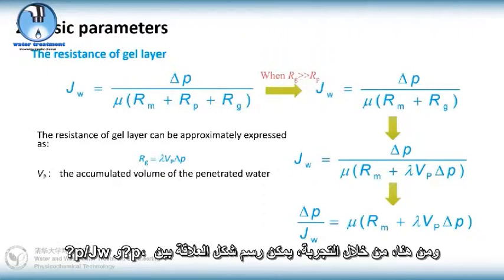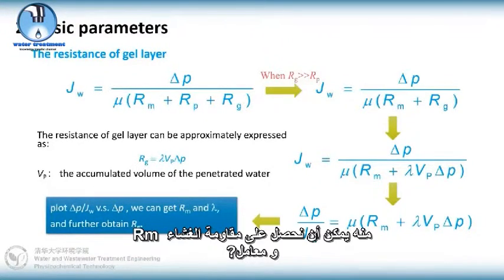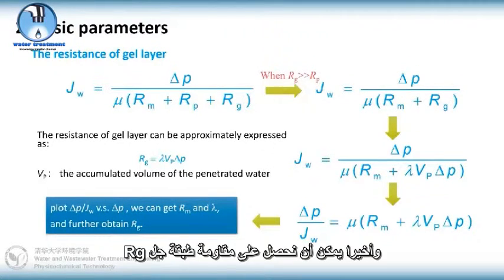Hence, through experiment, the correlation figure between dP over dW and dP could be plotted, from which we can get the membrane resistance Rm and a coefficient lambda, and finally we can get the resistance of gel layer Rg.